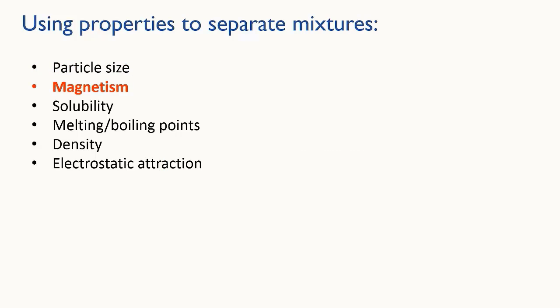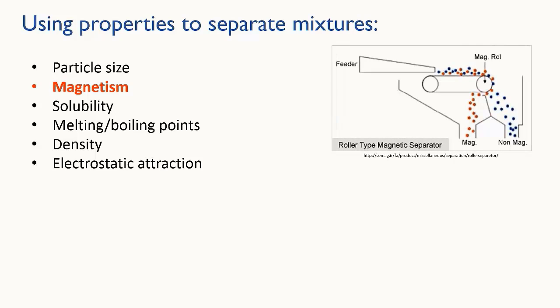Magnetism is another useful property for separating things. If one of the components of your mixture is magnetic, a magnet can be used to attract it away from the other components. Recycling centers use this to remove magnetic material from mixed recycling streams. You can see in this diagram that the roller at the end of the conveyor belt is magnetic, meaning that the red particles, which must be magnetic themselves or respond to magnets, get pulled around underneath the roller and so are separated out from the blue ones.